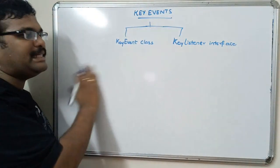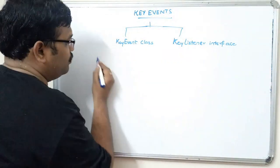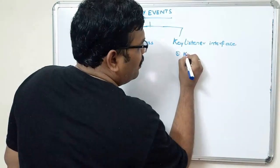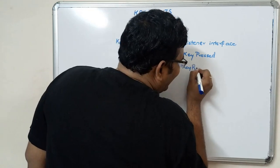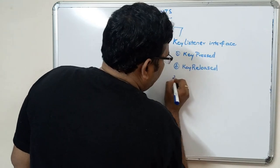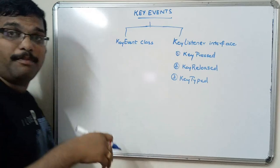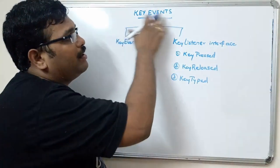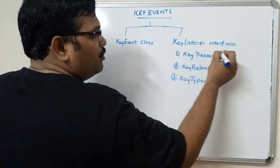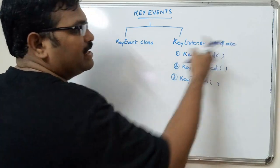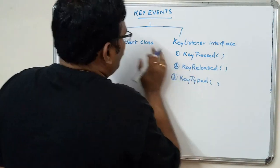So with the KeyEvent class and KeyListener interface, the possible events are: key pressed event, key released event, and key typed event. Three events are possible for key events. These are the abstract methods available in the KeyListener interface, as discussed in the previous session.